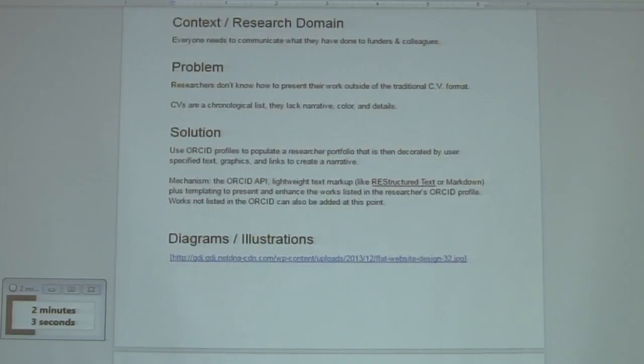The idea is that you can use a web API to download data from ORCID and generate a Sphinx or markdown web templating system like Sphinx can consume, and then the user can add content to that like images and text.